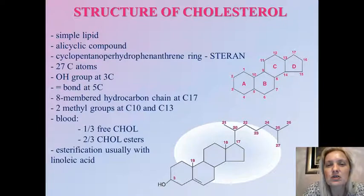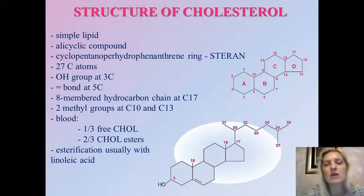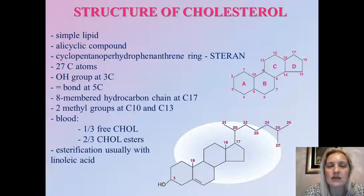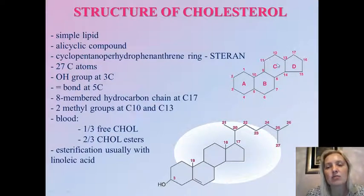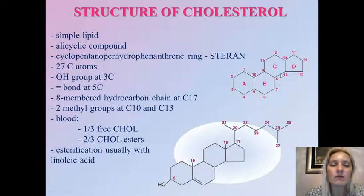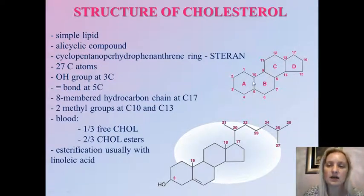Cholesterol belongs to the group of simple lipids. Simple lipids are molecules which cannot hydrolyze to produce more simple compounds. Speaking of the structure of cholesterol, it's considered an alicyclic compound with a very specific steran ring composed of four condensed rings — three six-membered rings and one five-membered ring — forming the cyclopentanoperhydrophenanthrene ring, which is the basis of all steroid compounds including cholesterol.